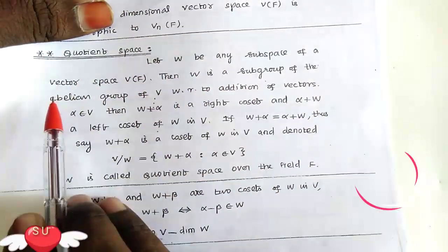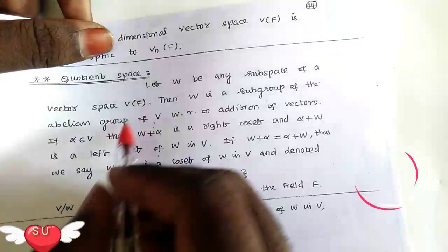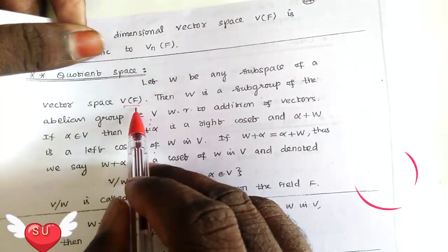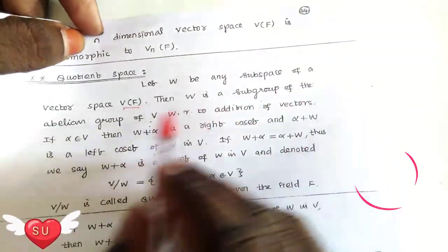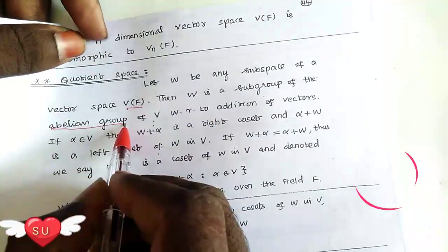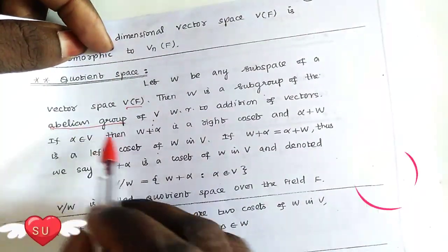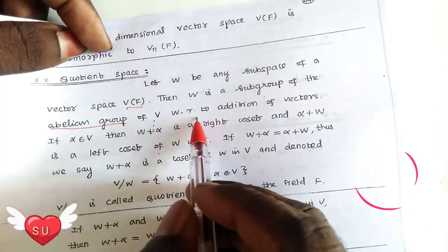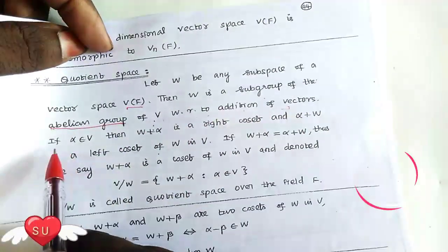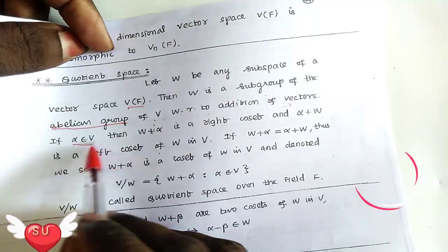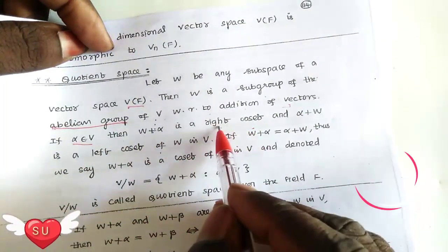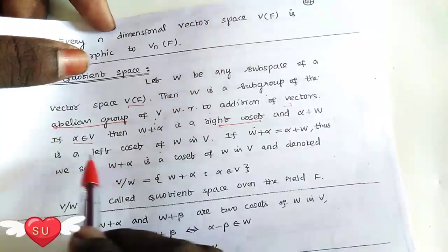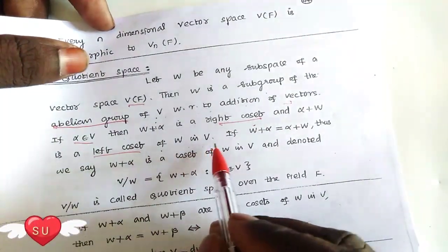If you have any subspaces of a vector space V(F), then W is a subgroup of the abelian group. The abelian group is a quotient group. Of V, we write to addition of vectors. If alpha belongs to V, then W plus alpha is a right coset. And alpha plus W is a left coset of W in V.